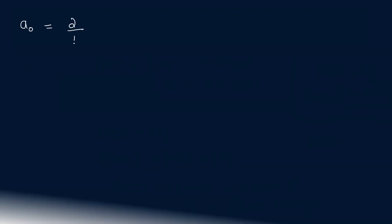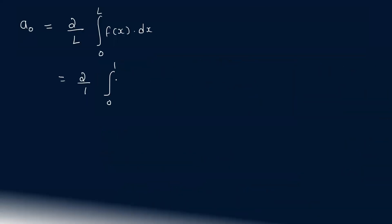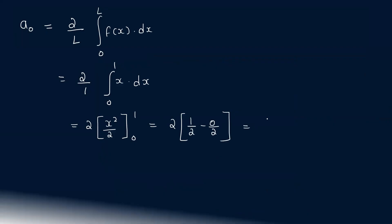The coefficient a naught is equal to 2 by L times the integral from 0 to L of f of x dx. That equals 2 times the integral of x dx from 0 to 1, which equals 2 times x squared by 2, evaluated from 0 to 1, that is 2 into 1 by 2 minus 0, which equals 1.